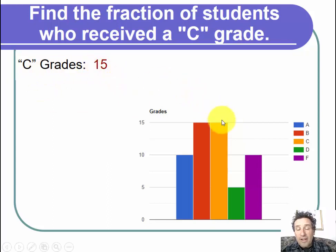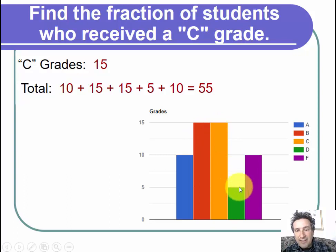Now we have to find the total. To find the total, we need to add all the A's, the B's, the C's, the D's, and the F's. And we can see that there were 10 A's, 15 B's, 15 C's, 5 D's, and 10 F's. If I add 10 plus 15 plus 15 plus 5 plus 10, I get 55.